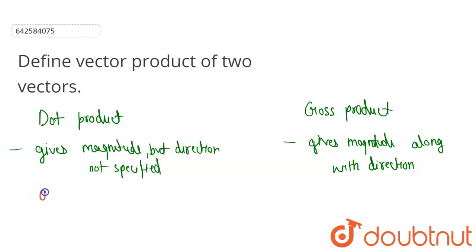Let us say there are two vectors: vector a is a1 i cap plus a2 j cap plus a3 k cap, and let second vector be b, that is b1 i cap plus b2 j cap plus b3 k cap.